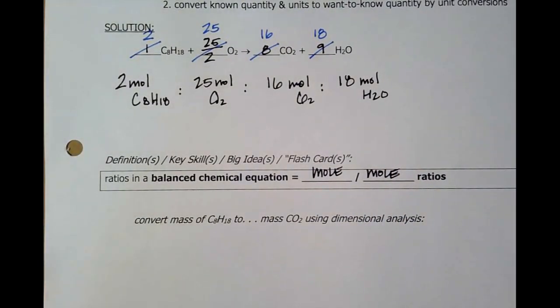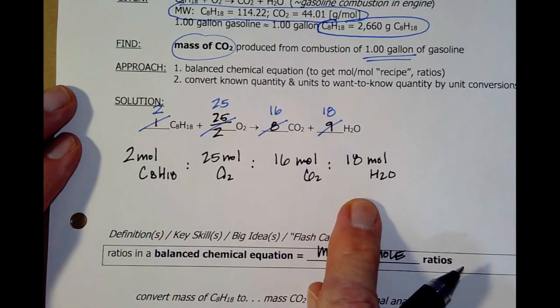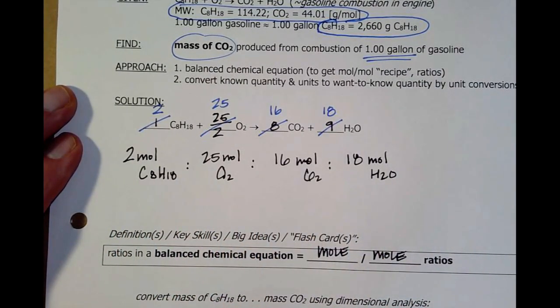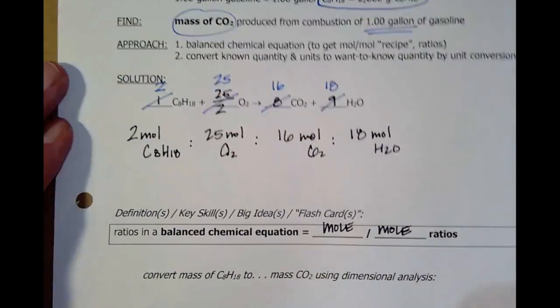When I see a chemical reaction, I'm going to say, oh, two moles of the C8 reacts with 25 moles of oxygen to give me 16 moles of CO2, 18 moles of H2O. There is my recipe. So, the big idea here is my ratios in a balanced chemical equation are mole to mole ratios. Now, we can convert from grams to moles, moles to grams. Now, we have conversions, moles of products, moles of reactants. Let's look at how we would do this.